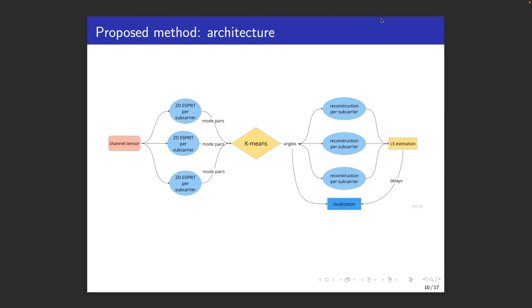Finally, once we have the paired angle of arrival, angle of departure and delay per path, we can provide those as inputs to the localization algorithm.